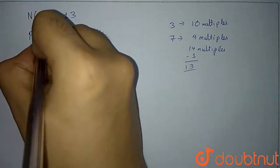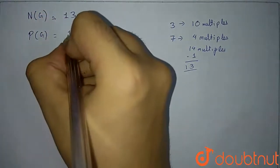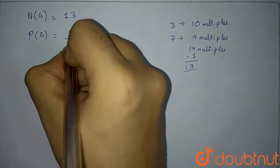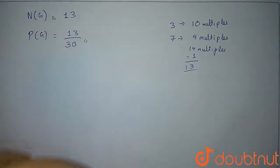So N of G will be 13. Now similarly, we can calculate the probability of G. It will be 13 upon 30. So this is the probability of event G. This was the answer of the question.